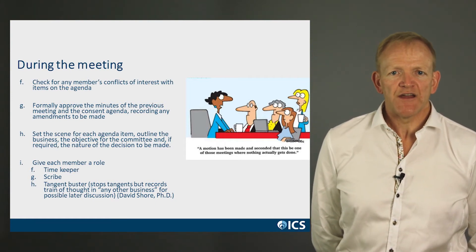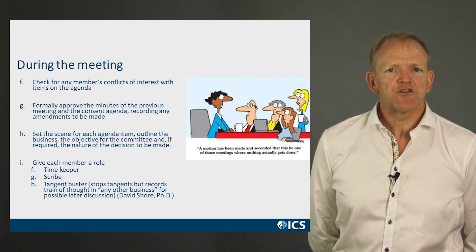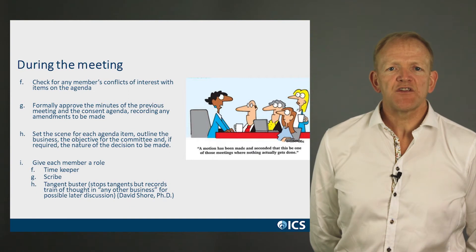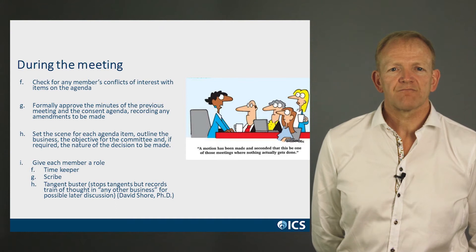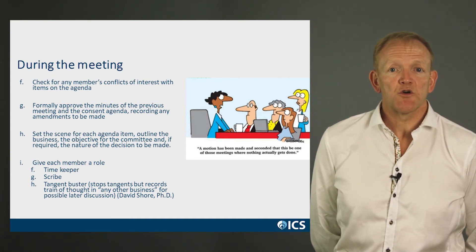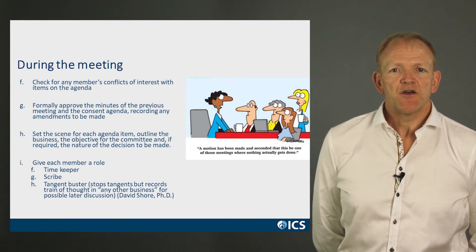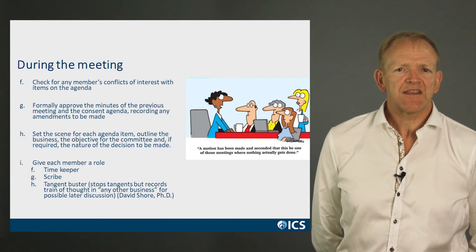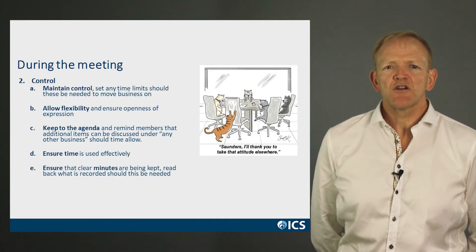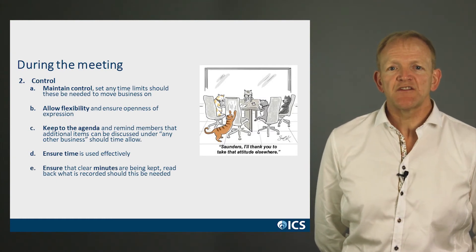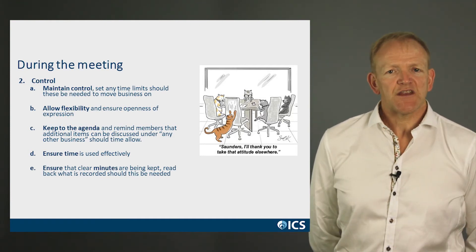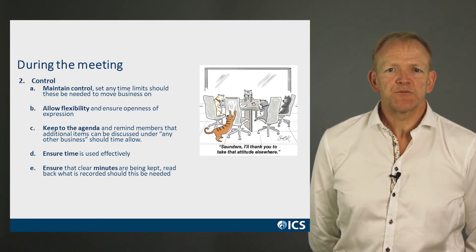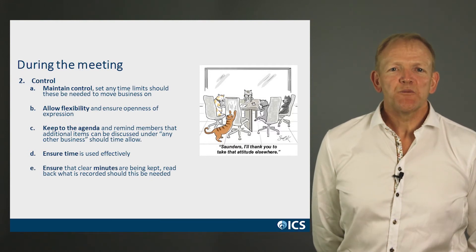Set the scene for each agenda item, outline the business and the objective of the committee, and if required, describe the nature of the decision to be made. Consider giving each member a specific role such as timekeeper or minute taker. Some chairs might like to assign the role of 'tangent buster,' which stops tangents but records the train of thought for later discussion. Maintain control as the chair, set time limits where needed, but allow flexibility and openness of expression. Stick to the agenda and remind members that additional items can be discussed under any other business, should time allow.